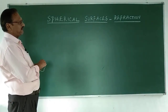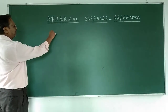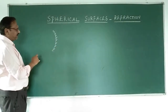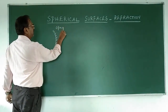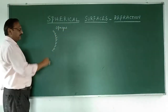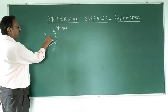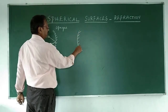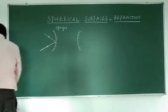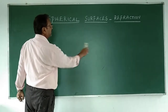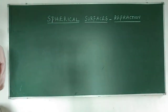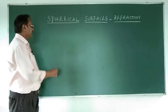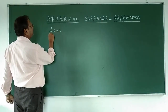Today we are going to learn about spherical surfaces. Previously in reflection, we learned about spherical surfaces like the concave mirror, which is an opaque object — light cannot pass through, it bounces back. We had concave mirrors and convex mirrors and learned their properties. Now, for refraction, we are going to have a surface through which light passes through — naturally, we will take a lens.